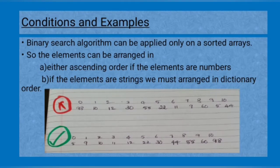Conditions and examples for binary search: binary search can be applied only on a sorted array. So the elements can be arranged in either ascending order if the elements are numbers, or if the elements are strings we must arrange in descending order. The green tick mark is correct order for binary search and the red cross mark indicates wrong order.